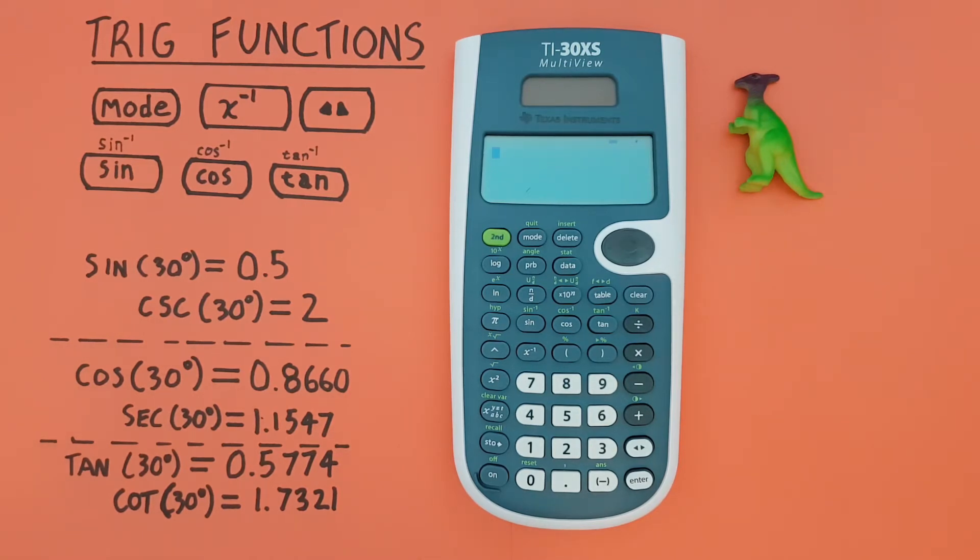In this video we'll be finding the sine, cosine, tangent, cosecant, secant, cotangent, and arcsine, arccos, and arctan of a degree.